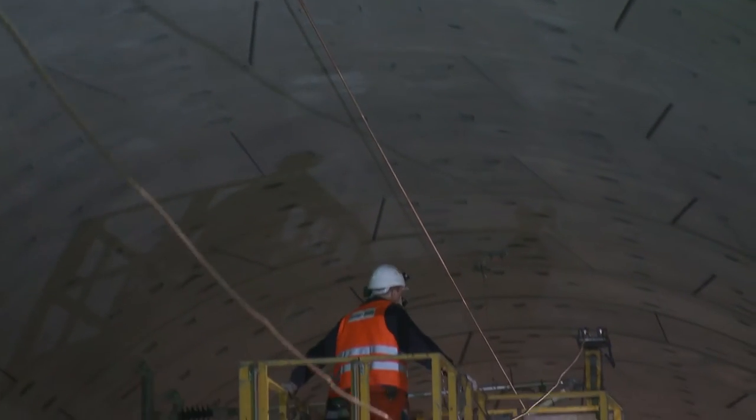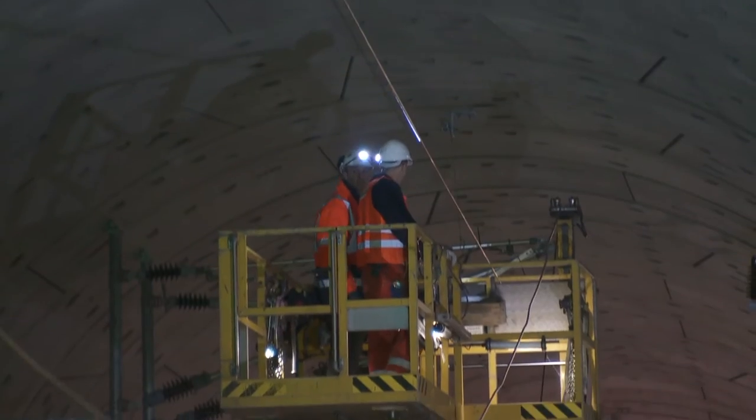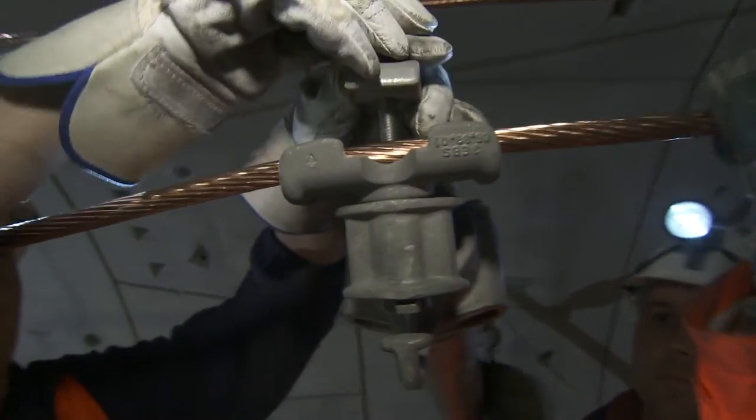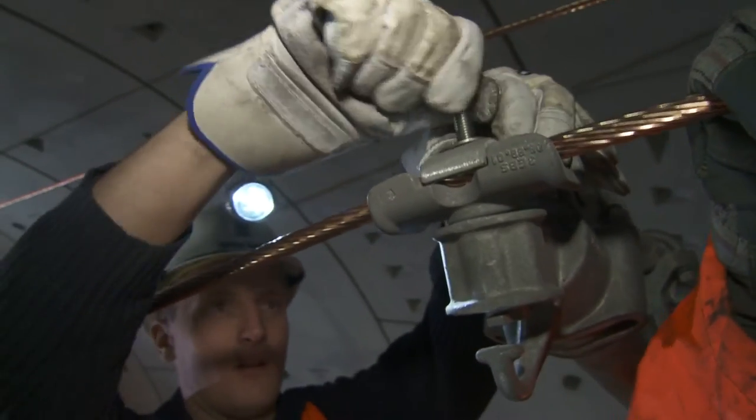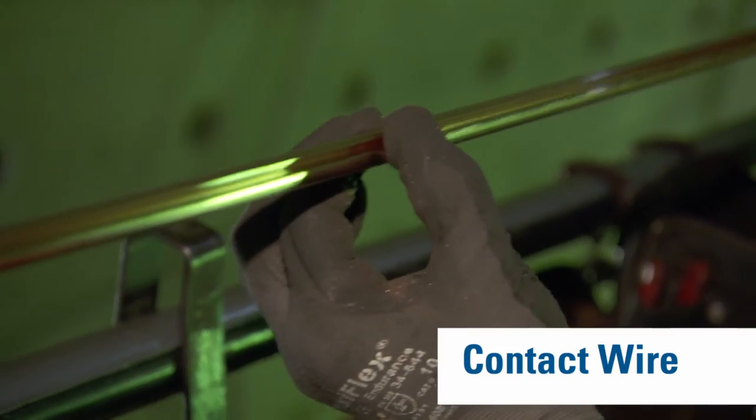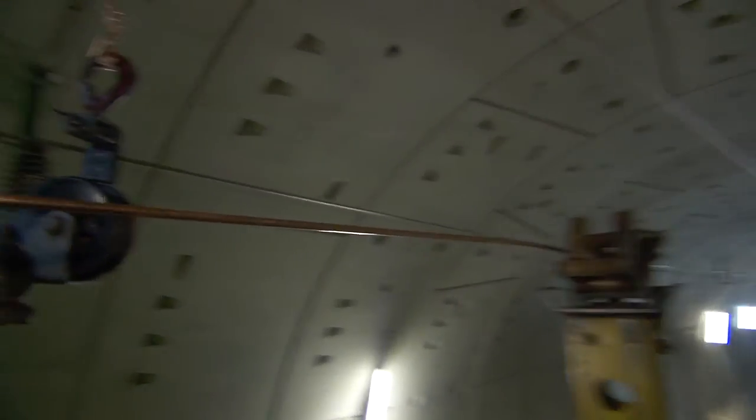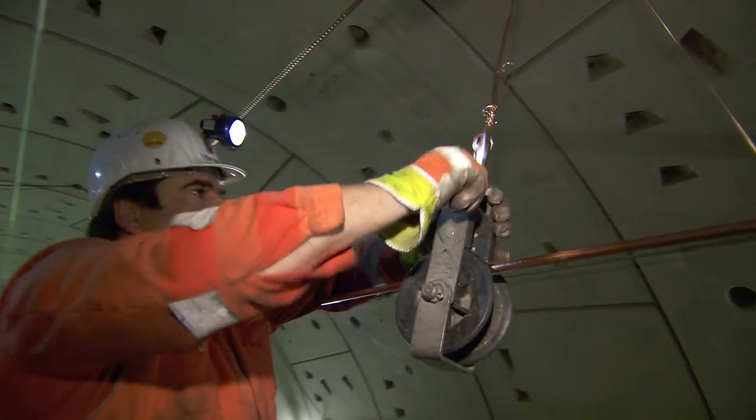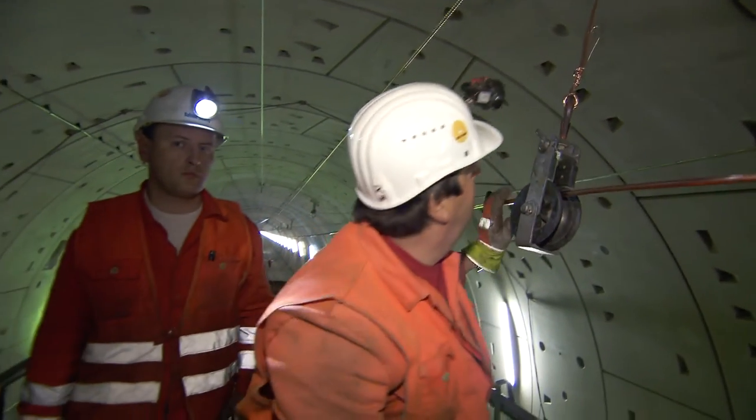What looks simple and inaccurate at first glance will become a high-precision overhead contact line by the end of the day. Whether the train will be evenly supplied with power depends on the location of the contact wire. The specialists from Balfour Beatty Rail work with the highest concentration as they draw in first the catenary wire and then the contact wire. Every move has to be just right.